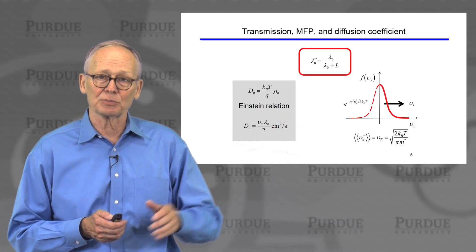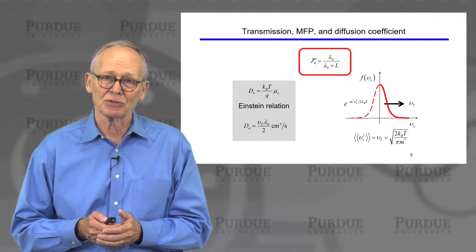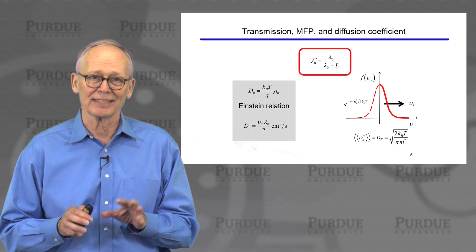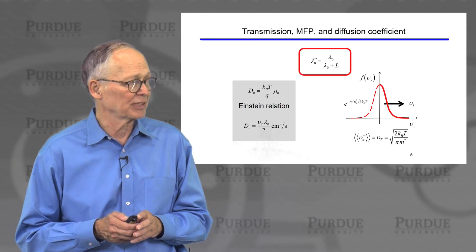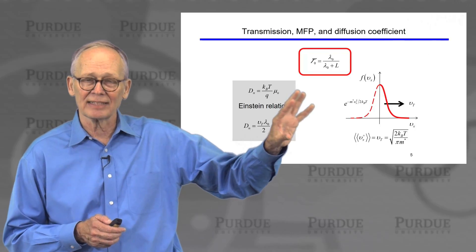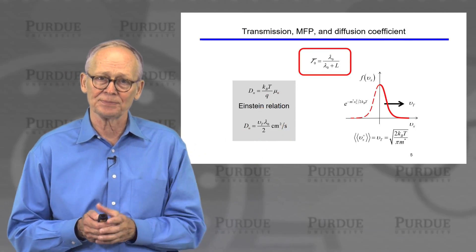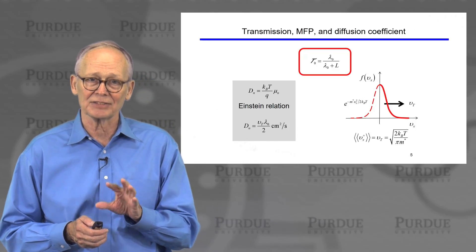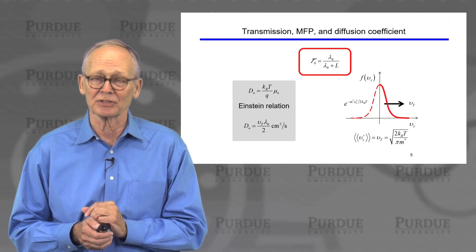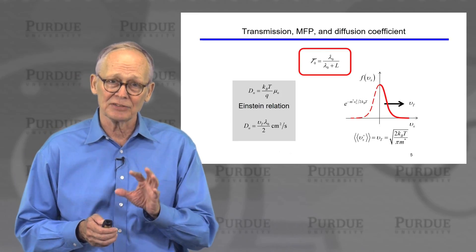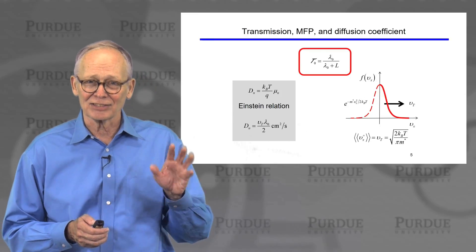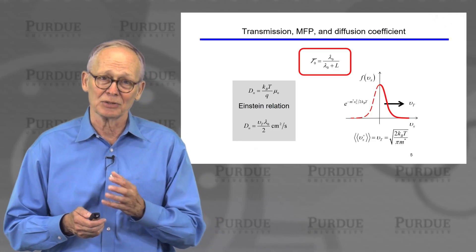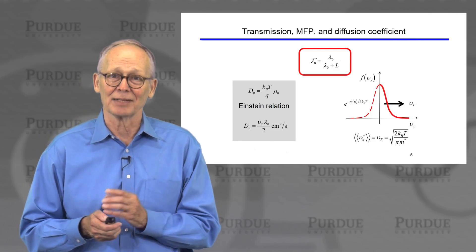The velocity in this expression is the unidirectional thermal velocity. This is a very important velocity in our understanding of nanoscale MOSFETs. This is the average velocity of the electrons moving in the plus x direction — the direction from the source to the channel. For a non-degenerate semiconductor, there are some complicated Fermi-Dirac integrals that appear when we have to include degenerate semiconductors.